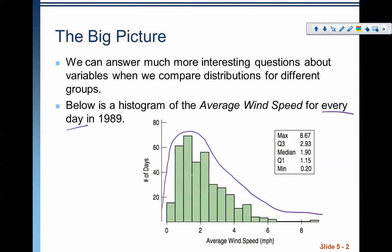It's unimodal, not symmetric. It's skewed to the right. Looks like it's got a center, a median of about 1.9 here. Its interquartile range is between 1.15 and 2.93. And a full range from 0.2 to 8.67. So there's some interesting things to say about that. However, it's not as interesting as it could be because there's a lot that this graph doesn't tell us.